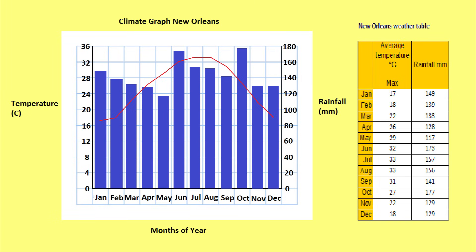The following patterns can be identified from this graph. New Orleans has high rainfall and temperatures in the summer months and lower rainfall and cooler temperatures in the winter months. New Orleans has a maximum average temperature range from 17 degrees Celsius to 33 degrees Celsius.